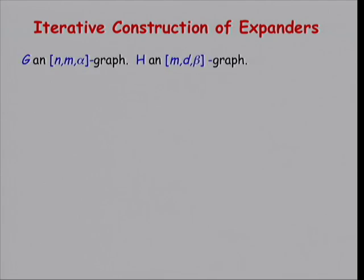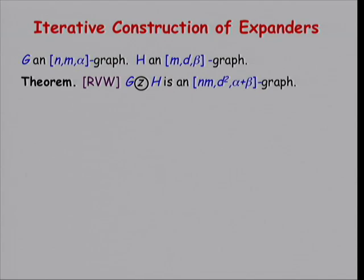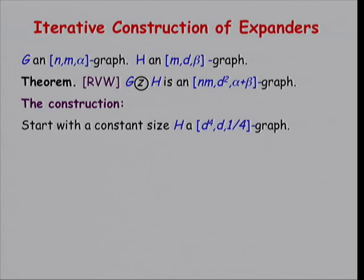So how does this help us build expanders? The theorem says that if we have bounds alpha and beta on the spectral parameter, the new graph has low degree and is still an expander. The iterative construction is as follows: we want an infinite sequence of bounded-degree expanders. We start with some constant-size expander — degree d and number of vertices d to the fourth. Since it's constant size, we can enumerate over all of them, and with degree polynomial in the graph size there are simple explicit constructions, a variant on the projective plane.